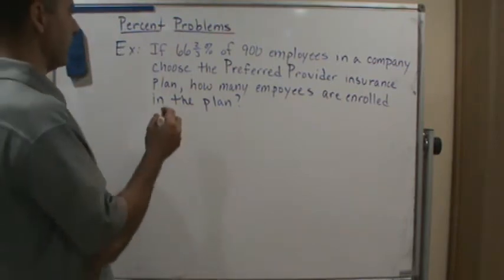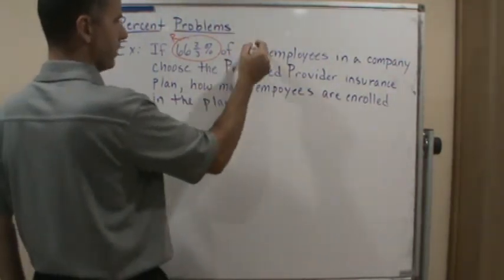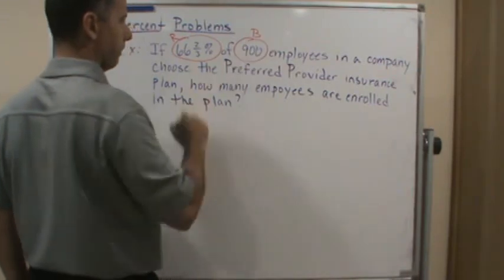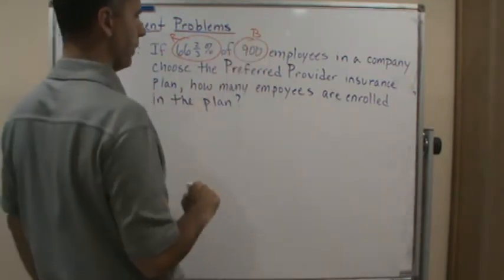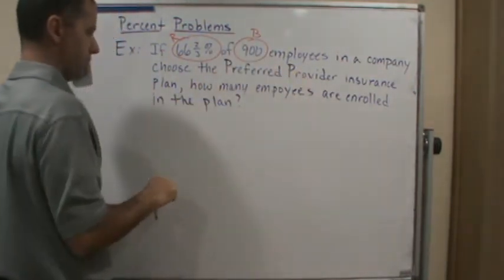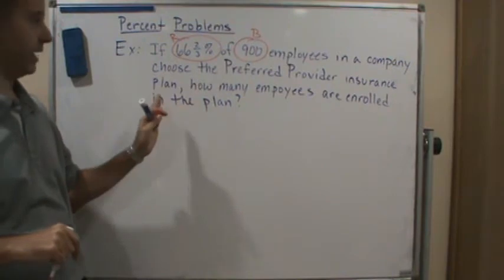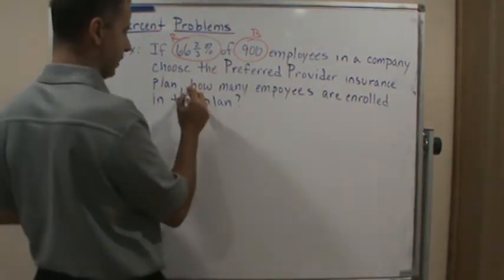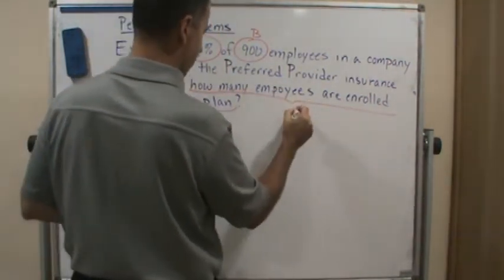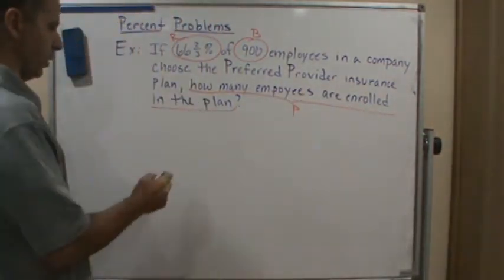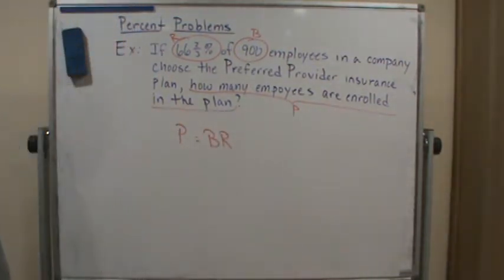Okay, so now, if we look at this here, this is our rate, and this 900 is the base. There's the word of, so if 66 and two-thirds percent of 900 employees in the company choose the preferred provider insurance plan, how many employees are enrolled in the plan? This is what we're looking for. We're looking for the portion. So this is the question. We're looking for P, and so we're going to use P equals RB or BR.